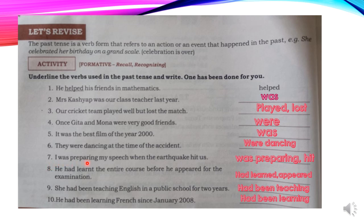Number seven: I was preparing my speech when the earthquake hit us. The verbs in the past tense are was preparing and hit. Number eight: he had learnt the entire past before he appeared for the examination. The words showing the verb are had learnt and appeared. Number nine: she had been teaching English in a public school for two years. The verb is had been teaching — it is the past perfect progressive tense.